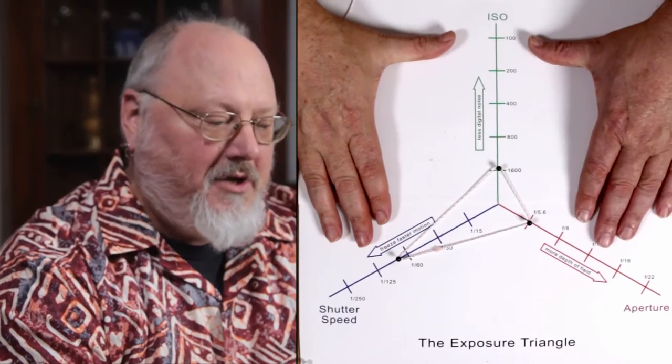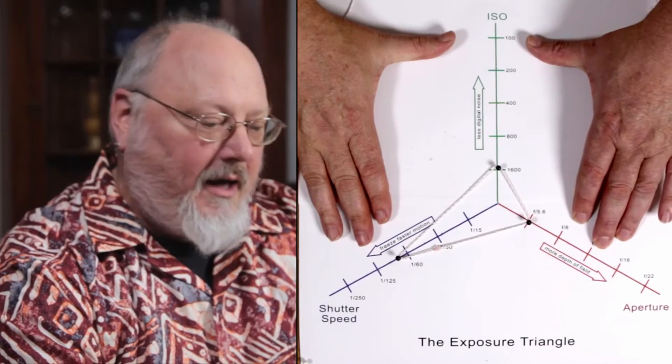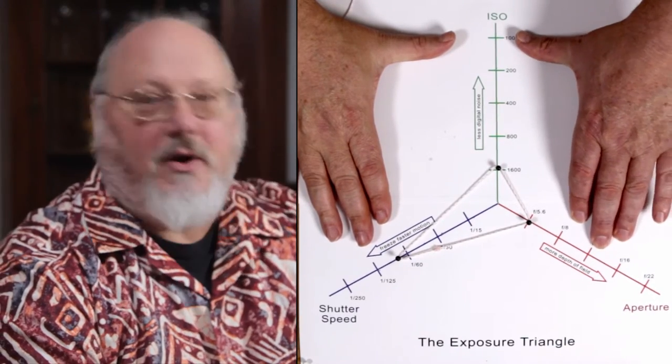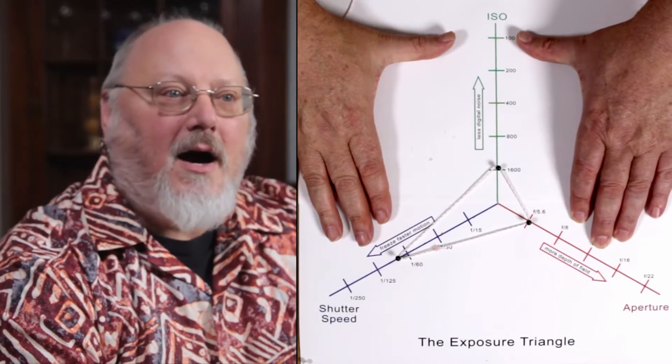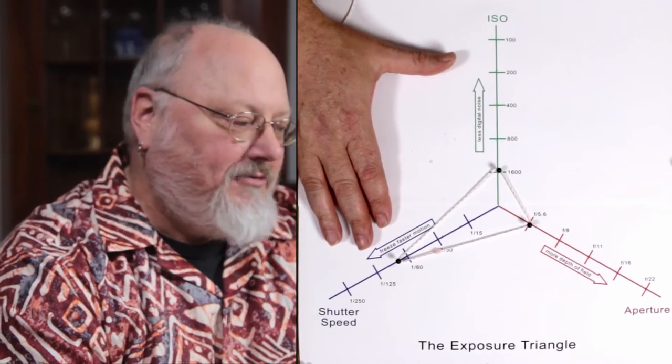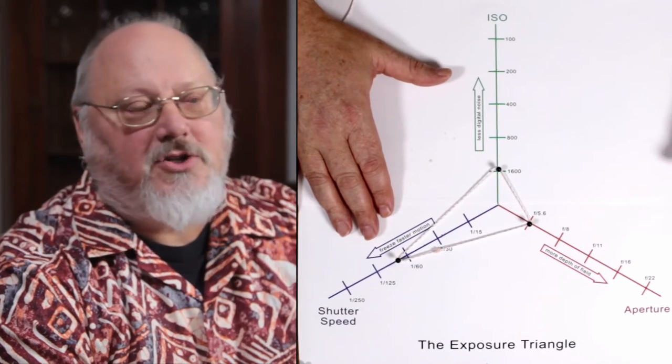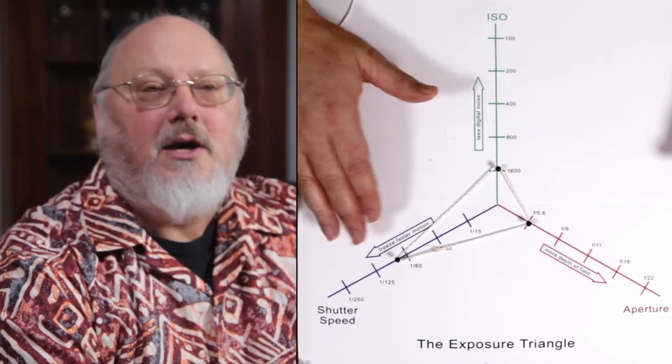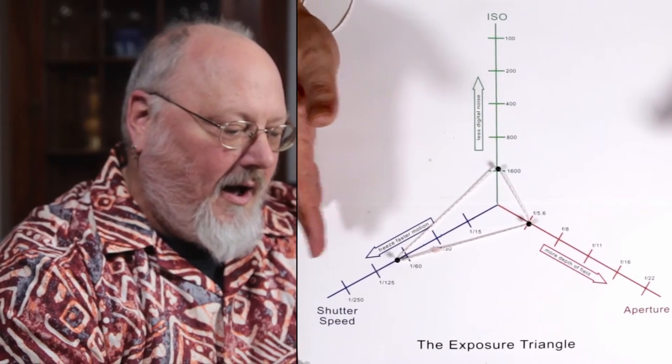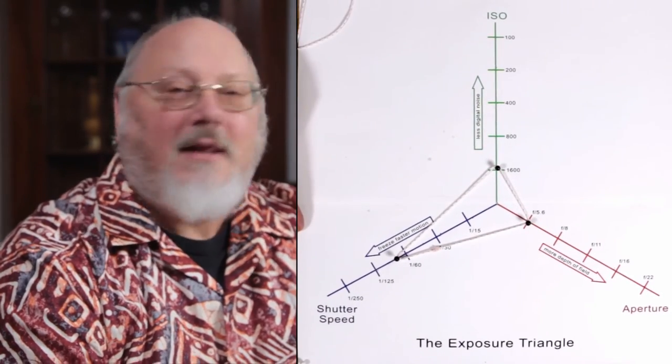So there you go. Those are the three legs of the exposure triangle. And you adjust them by setting the shutter speed, the aperture and the ISO on your camera. You can do those individually in the manual exposure mode. If you use the shutter priority or aperture priority, you set one, the camera sets the others. So I hope that has been helpful. Thank you.